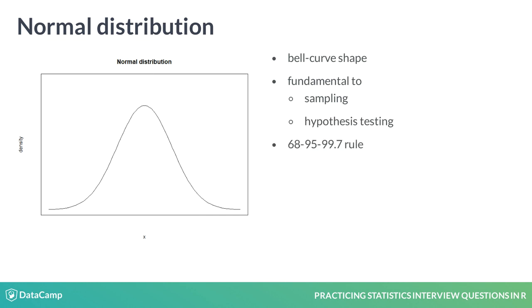The normal distribution is usually associated with the 68-95-99.7 rule. Questions about this rule are common in interviews.